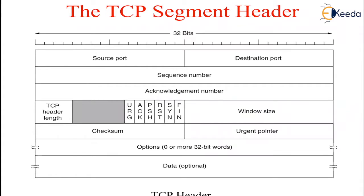The figure shows a TCP segment. Every segment begins with a fixed-format 20-byte header. The fixed header may be followed by header options. After the options, if any, up to 65,495 data bytes may follow, where the first 20 bytes refers to the IP header and the second 20 bytes refers to the TCP header. Segments without any data are legal and are commonly used for acknowledgments and control messages.